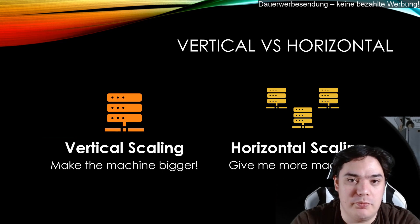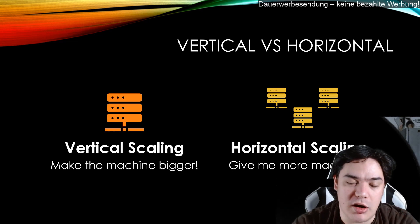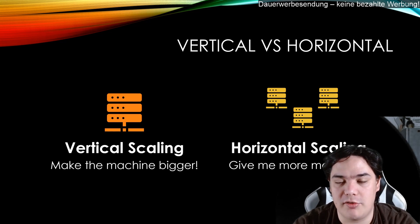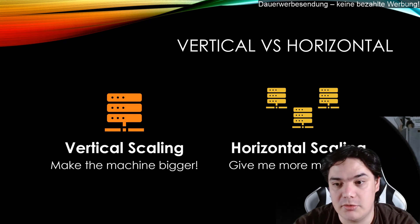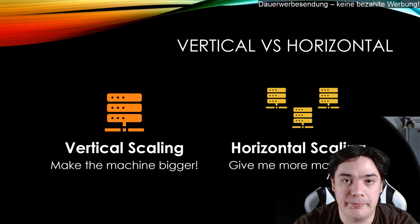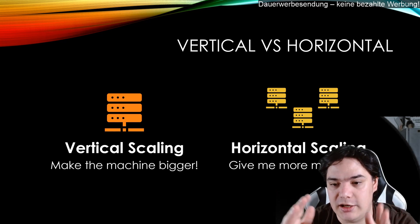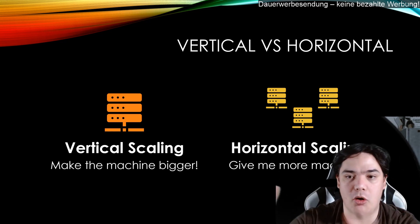Scaling vertically basically means making the machine bigger. For example, if you have a virtual server with one CPU and you want to scale it vertically, you take a machine with two CPUs or more. Scaling horizontally, or scaling out, is basically adding more machines instead of making the machine bigger.